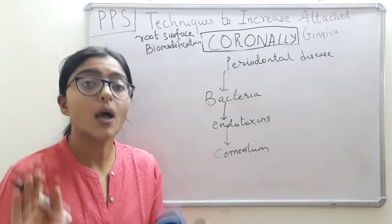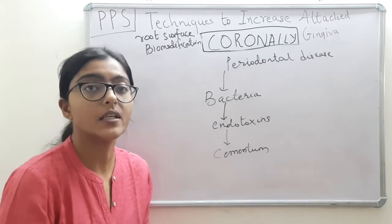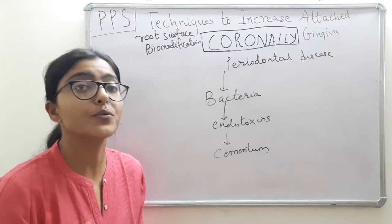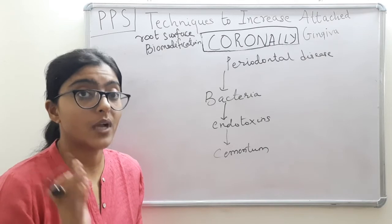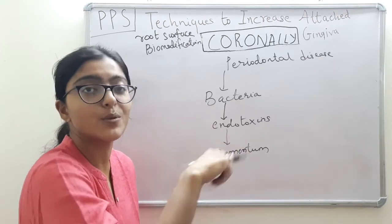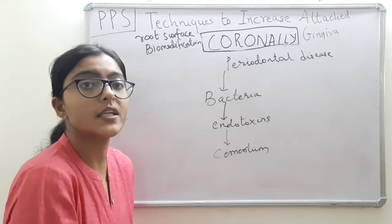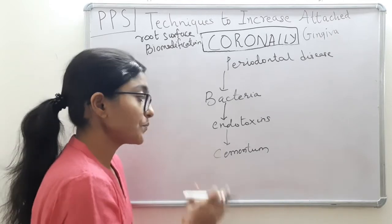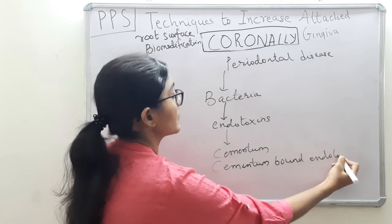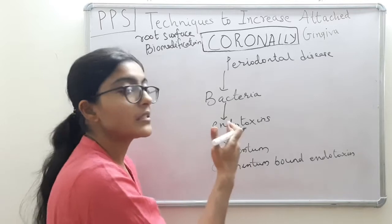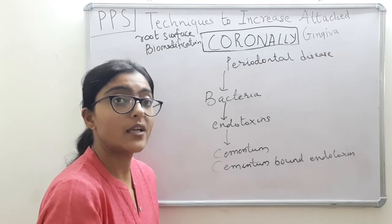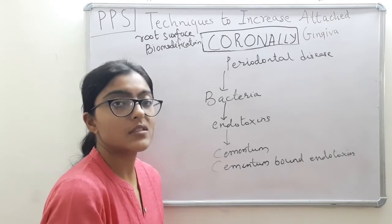Cementum-bound endotoxin cannot be eliminated completely. In vitro it has been shown that total removal of endotoxin is possible, leading to new tissue formation and cell proliferation. But practically, if we go behind removing all the endotoxin bound in the cementum, we will end up removing all the cementum and exposing the dentin, causing sensitivity — so that is totally impractical. This is the reason why we perform root surface biomodification. These agents demineralize the infected cementum, open the dentinal tubules, and expose collagen, thereby enhancing linkage and resulting in more successful treatment outcomes.